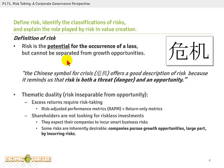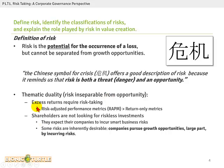The other important point this reading wants to make about that definition is that risk cannot be separated from growth opportunities. To illustrate that by way of metaphor, they use the Chinese symbol for crisis as offering a good description of risk, because it reminds us that risk is both a threat or danger and an opportunity. This is thematic to the FRM and to a general approach of risk.